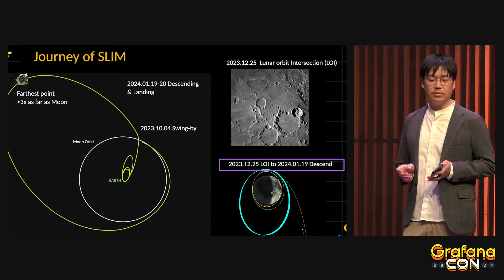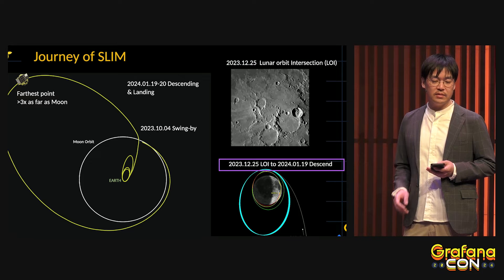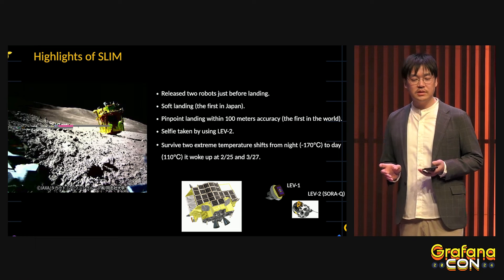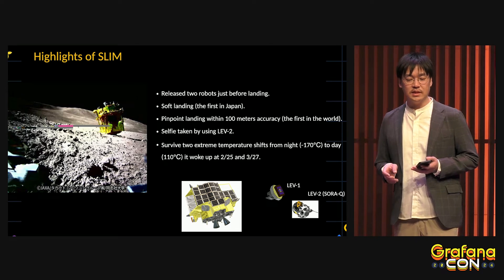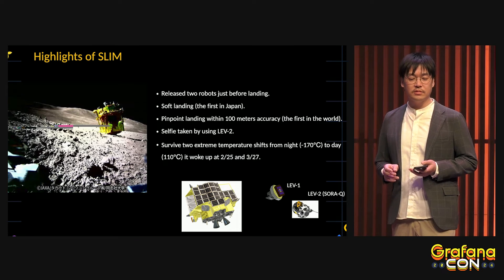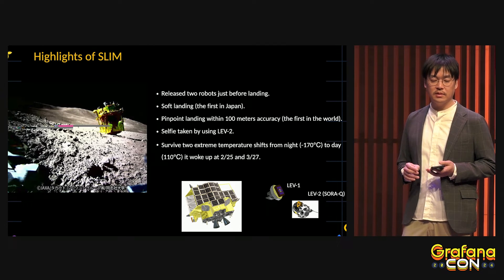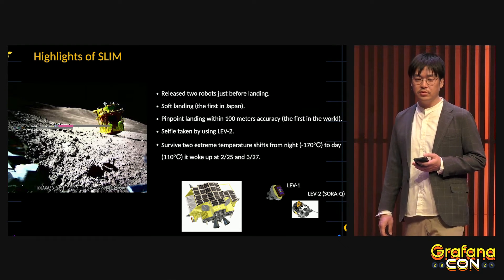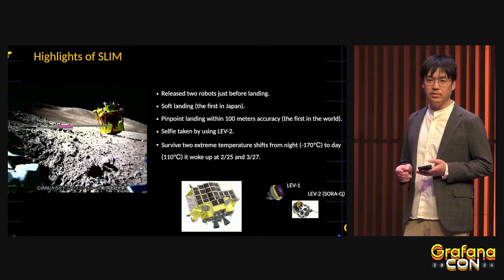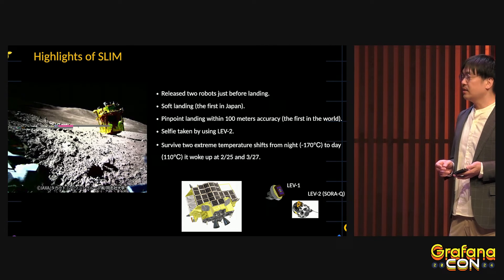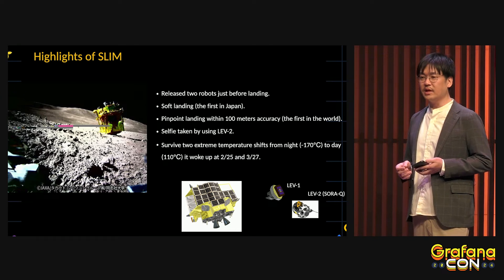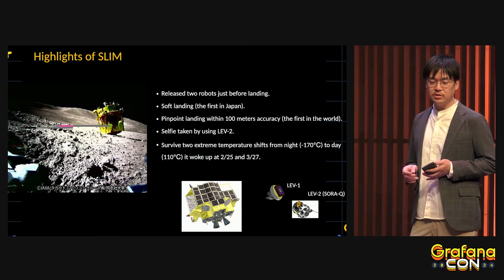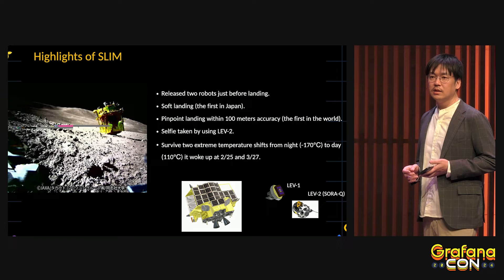SLIM remained in lunar orbit for one month, then attempted its moon landing. As you may know, the moon landing was successful — a first for Japan. Pinpoint landing within 100-meter accuracy was also successful, which was a first in the world.